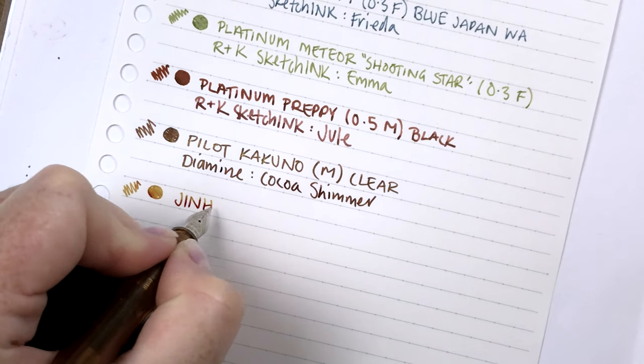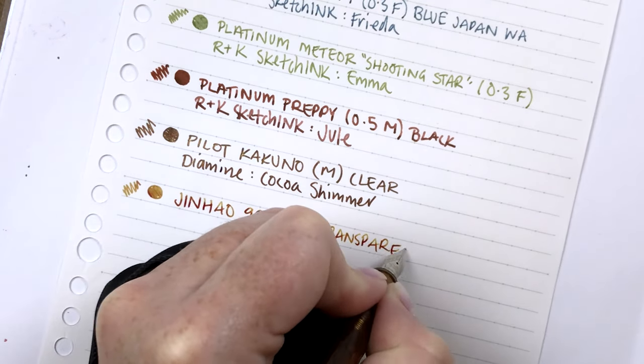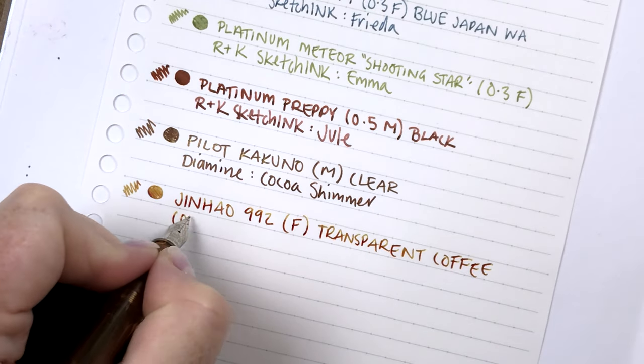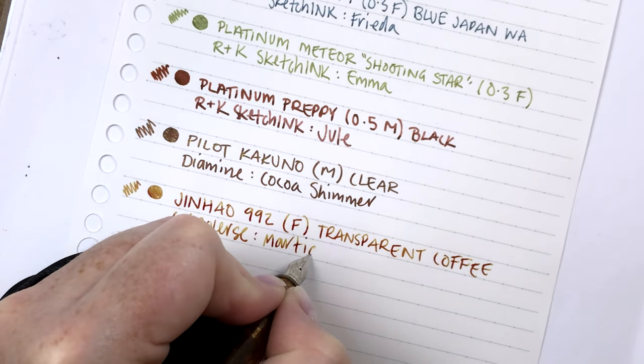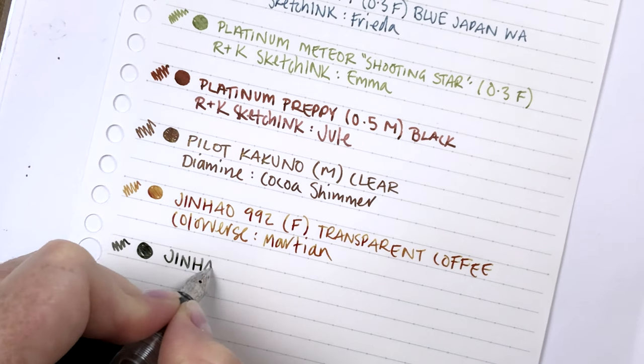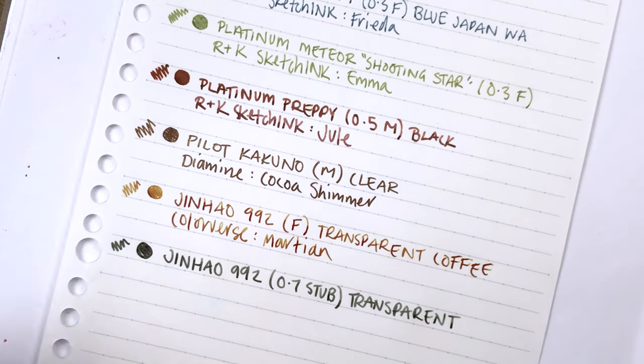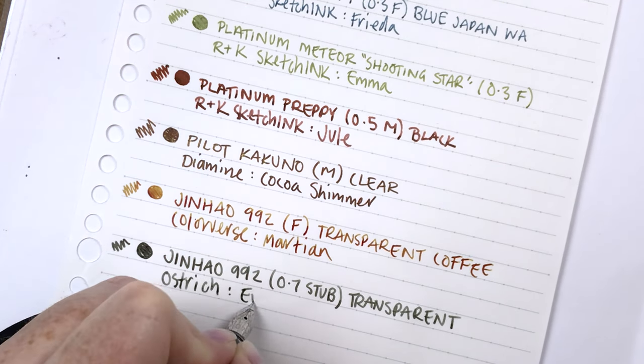Now we have the Jinhao 992s. This is the fine nib which it ships with, or you can get an extra fine. And then this one is the 0.7 stub nib. As you can see, it has kind of a calligraphic sort of look here. It's not a round line, it's more of a straight line, but very subtle.